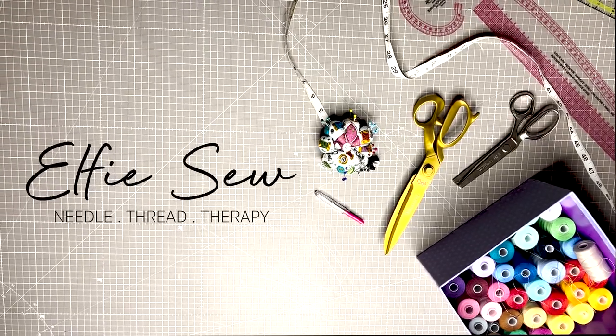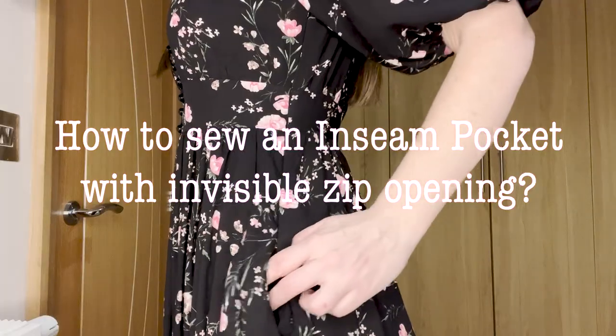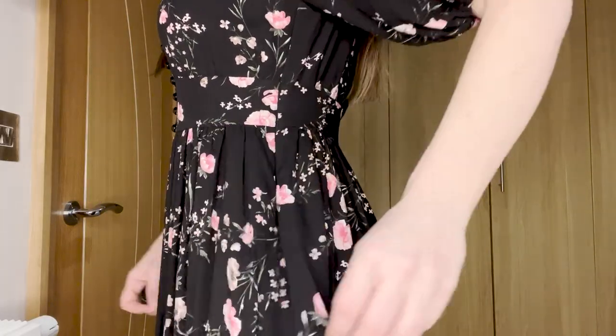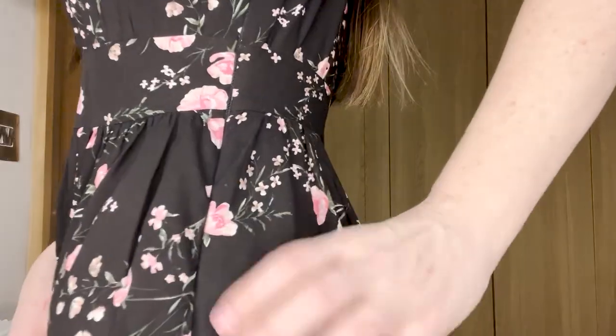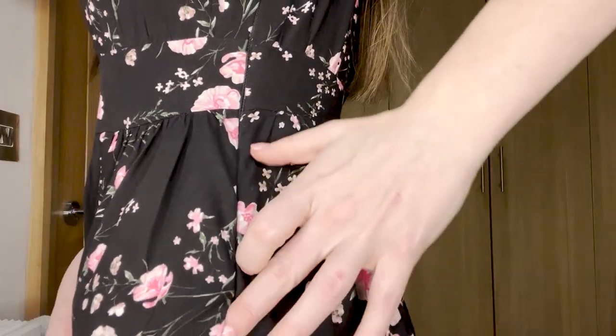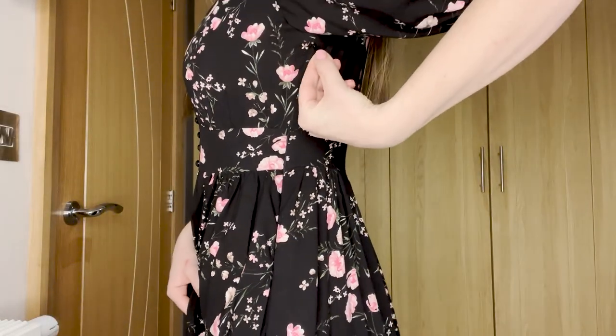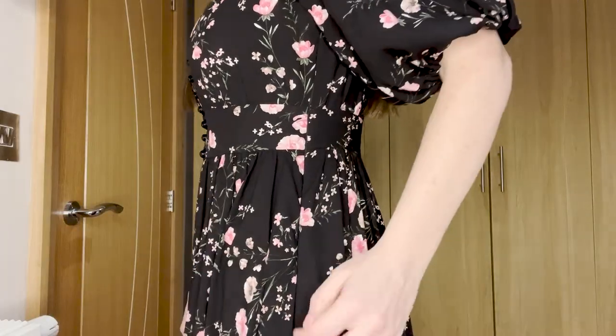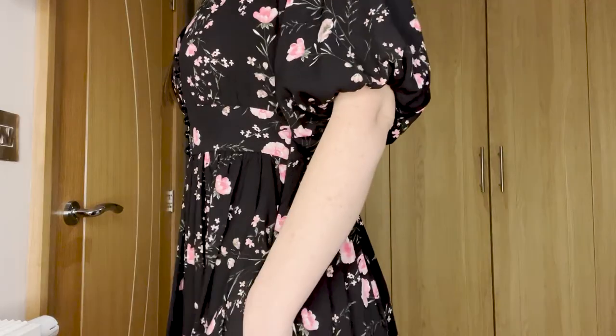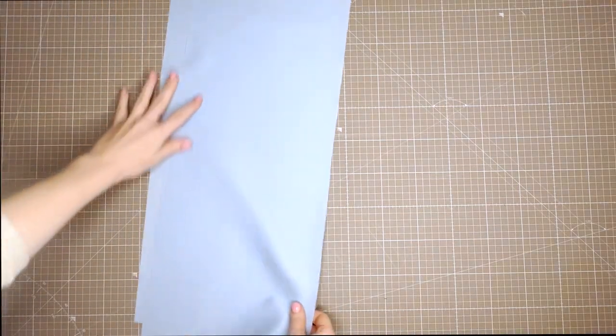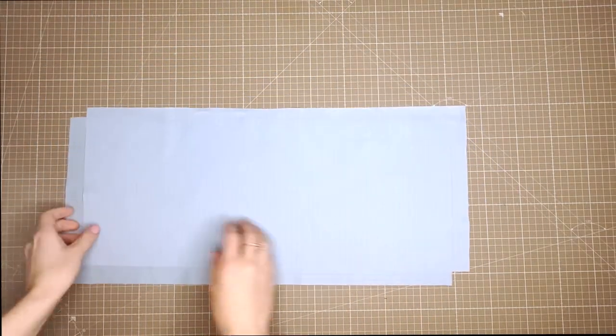This video will take you through the process of installing a pocket and a zip into the same seam. This is useful for skirts or dresses where you want an uninterrupted back, such as on patterned fabric. We will be working with a mock-up, but in reality you will have your front and back piece.